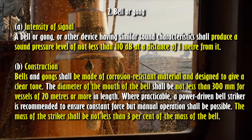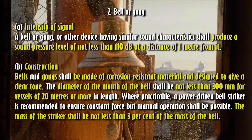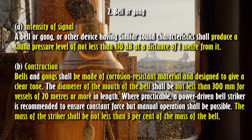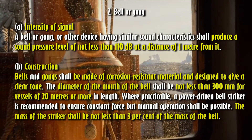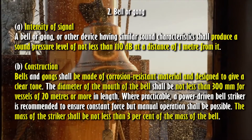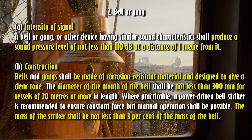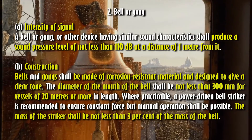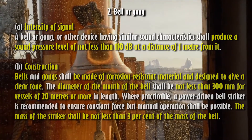B. Construction. Bells and gongs shall be made of corrosion-resistant material and designed to give a clear tone. The diameter of the mouth of the bell shall be not less than 300 mm for vessels of 20 meters or more in length. Where practicable, a power-driven bell striker is recommended to ensure constant force, but manual operation shall be possible. The mass of the striker shall be not less than 3% of the mass of the bell.